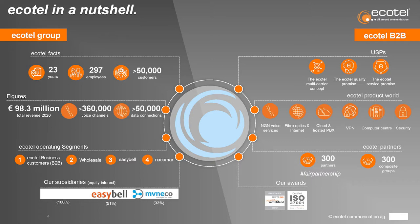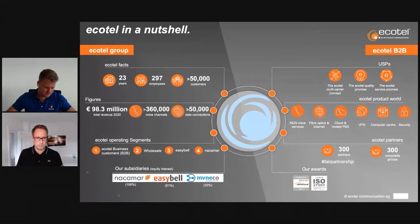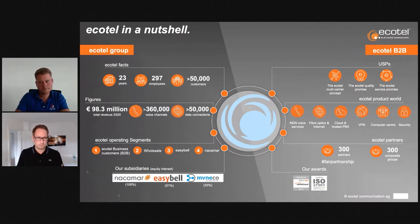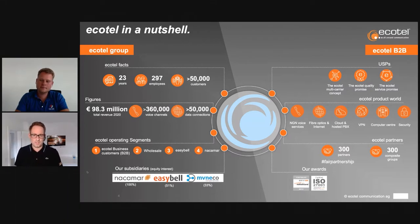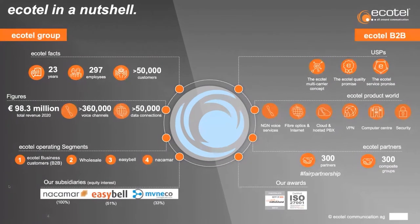Ecotel was founded in 1998 after the German telecommunication market was opened for deregulation. From that time, we developed from a preselection provider to a nowadays full-service provider around all data and voice products. In some milestones: we acquired Nakama or Tiscali Business in 2006–2007, and purchased our own data center located in Frankfurt am Main on Hanauer Landstrasse — very close to the DE-CIX, we are direct neighbors.